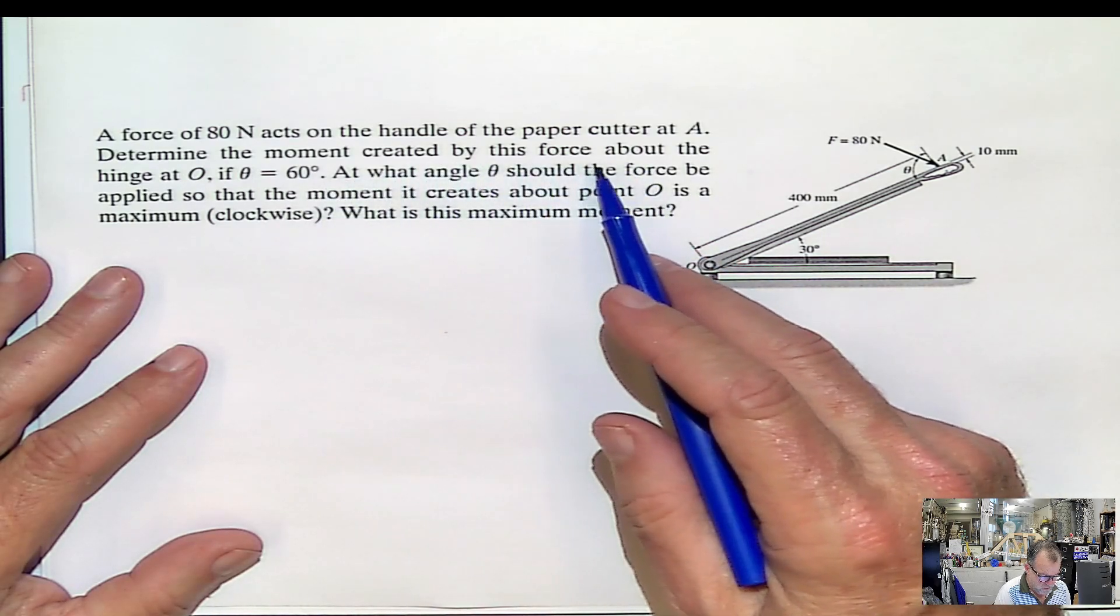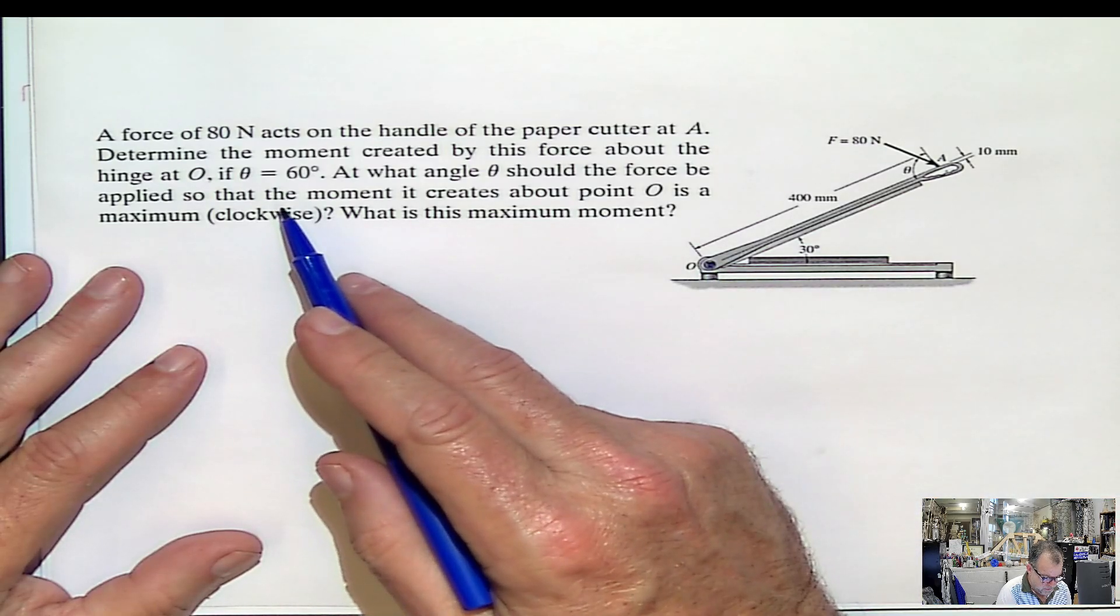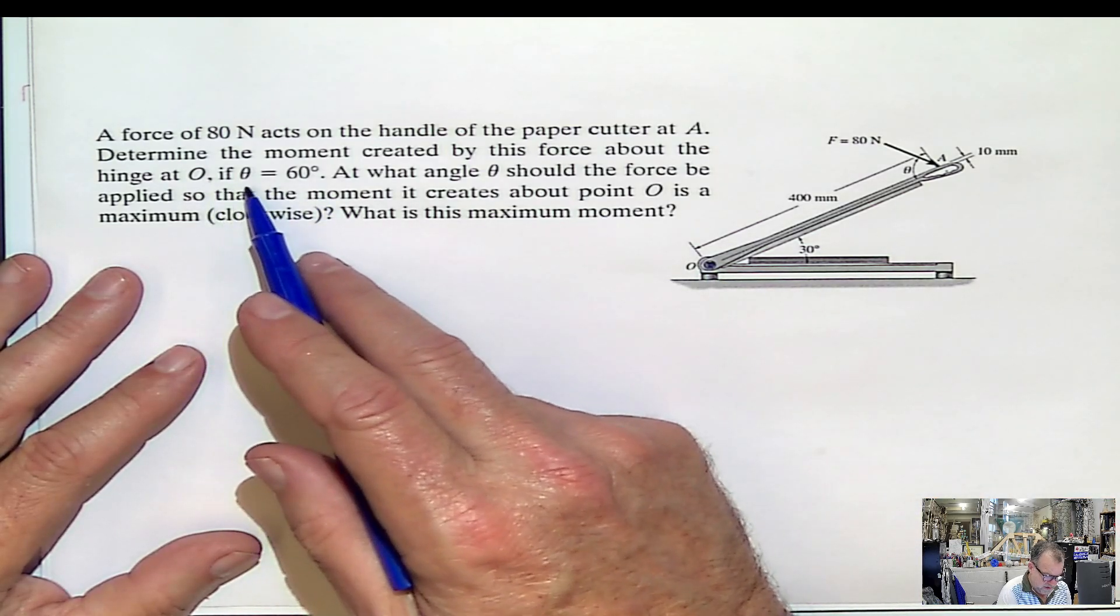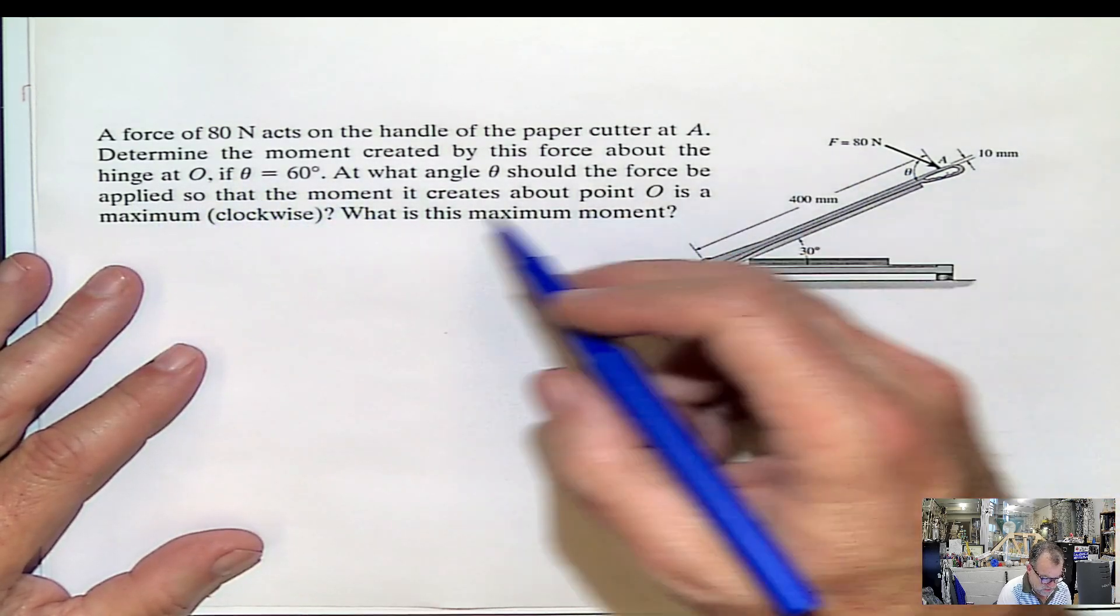Determine the moment created by this force about the hinge O. OK, perfect. If theta equals 60, OK, for the first part. Theta equals 60 for the first part.